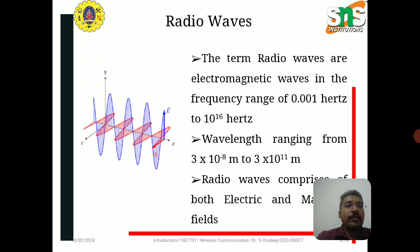Radio waves are electromagnetic waves in the frequency range of 0.001 hertz to 10 to the power of 16 hertz, with wavelength ranging from 3×10⁻⁸ meters to 3×10¹¹ meters. Radio waves comprise both electric and magnetic fields.